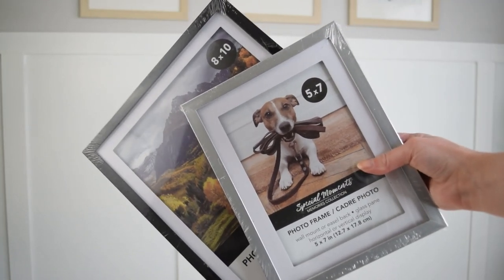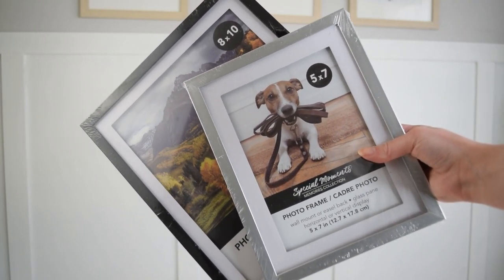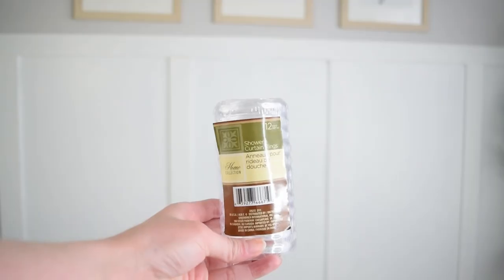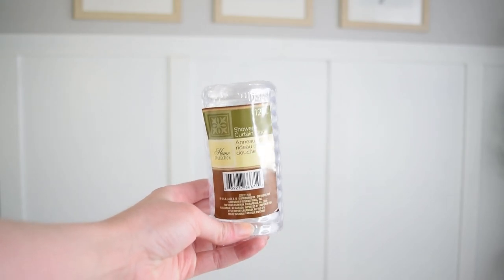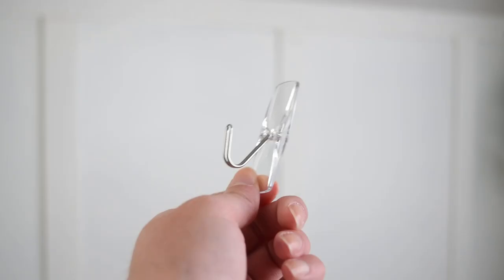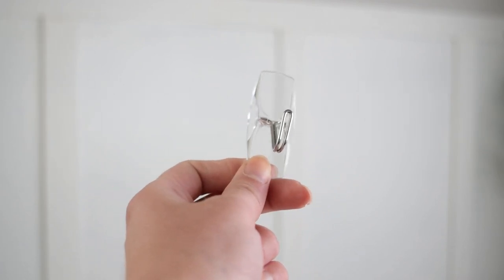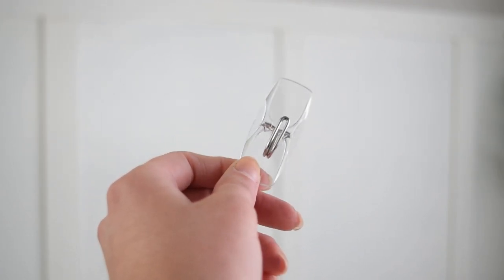What's great about this DIY dupe is it also doubles as a Dollar Tree DIY. I'm starting with two Dollar Tree frames, an 8x10 and a 5x7. I also picked up a pack of the shower curtain rings and I have these command hooks, the ones with the little metal hook on them. I think these best replicate the Pottery Barn item.